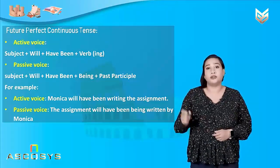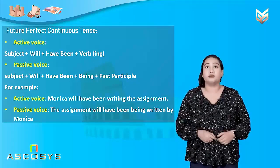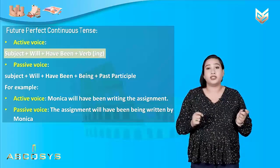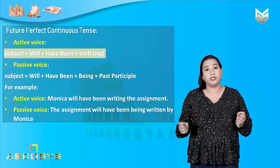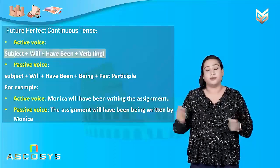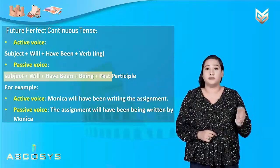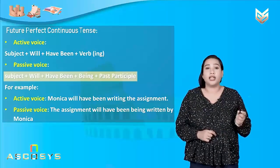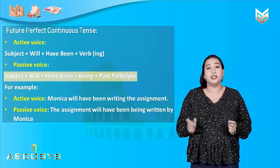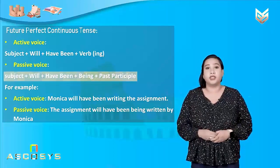How do we write a sentence in active voice in future perfect continuous tense? We will take a subject, add 'will' to it, then add 'have been', and then a verb having '-ing'. In the passive voice, we will take a subject, add 'will', then 'have been', then 'being', and then past participle.